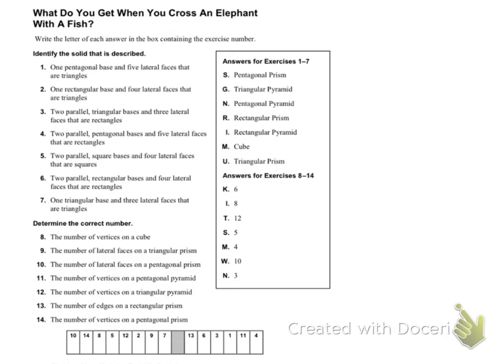Taking a look at questions 5 through 7 on the 8.4 puzzle time, it says to identify the solid that is described. So when you're looking at these questions — 5, 6, and 7 — they give you some information. It says two parallel square bases and four lateral faces that are also squares.